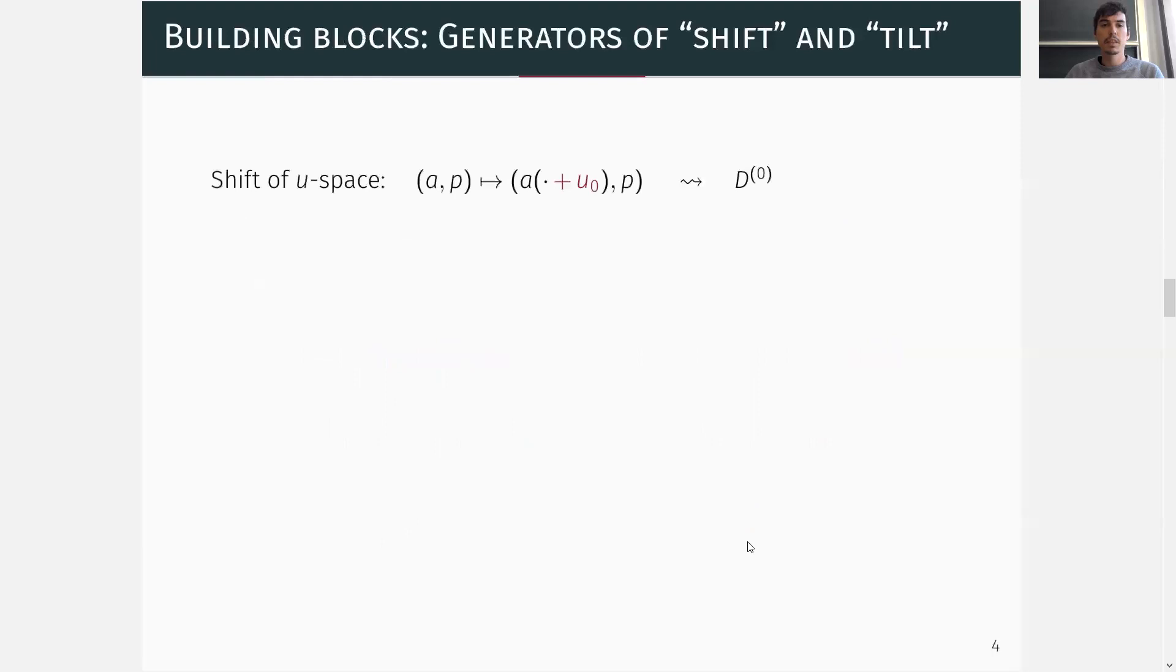Now we are ready to describe the building blocks on what the structure group is based on. Namely, we start with the map that shifts the non-linearity and keeps the polynomial fixed. Lifting this map to the space of all functions on pairs (A,P), we consider its infinitesimal generator and denote it by d^(0).